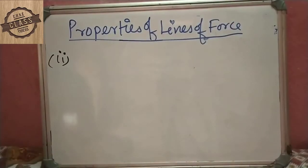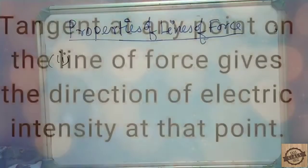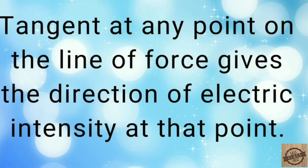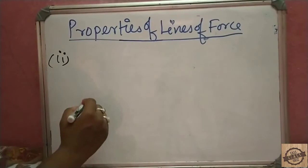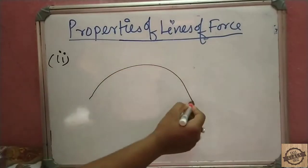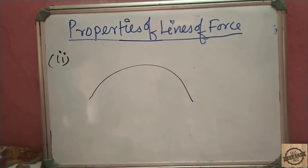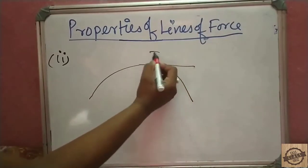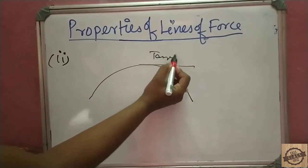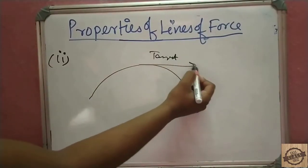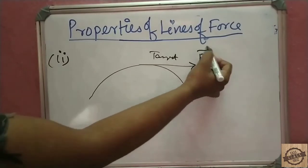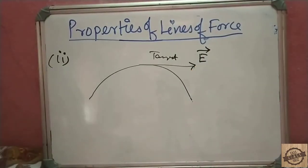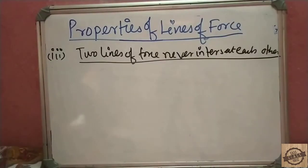The second property: the tangent at any point on a line of force gives the direction of the electric field intensity at that point. If you draw a tangent at any point on an electric line of force, that tangent indicates the direction of electric field intensity at that point.